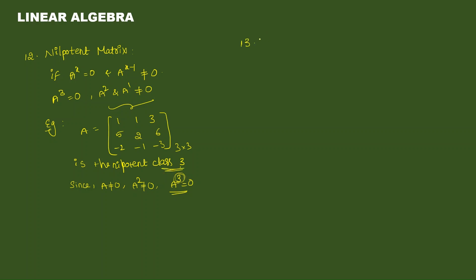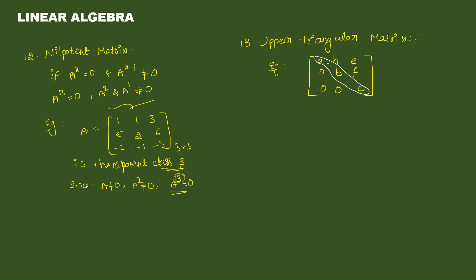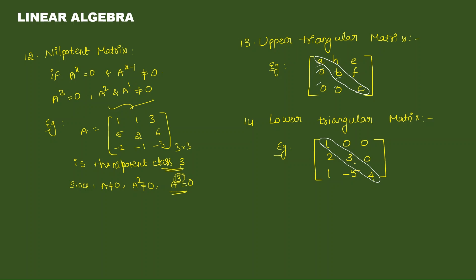Next — upper triangular matrix. A square matrix all of whose elements below the leading diagonal are 0 is called an upper triangular matrix. The leading diagonal elements are a, b, c. All elements below them are 0. Next — lower triangular matrix. A square matrix whose elements above the leading diagonal are 0 is called a lower triangular matrix.